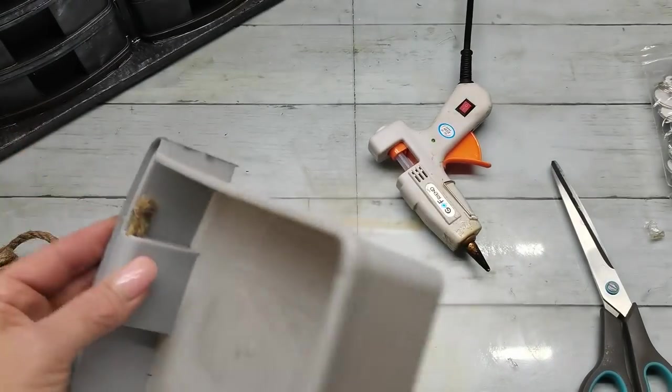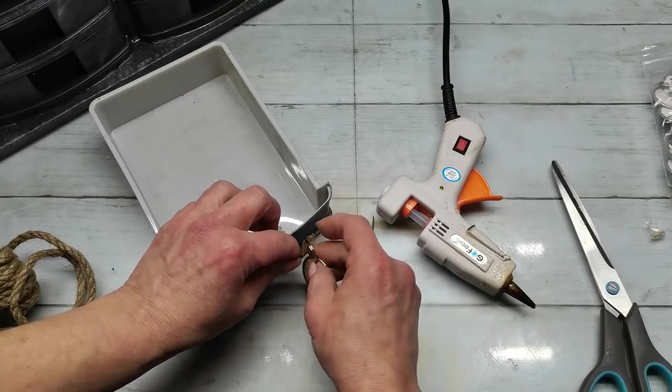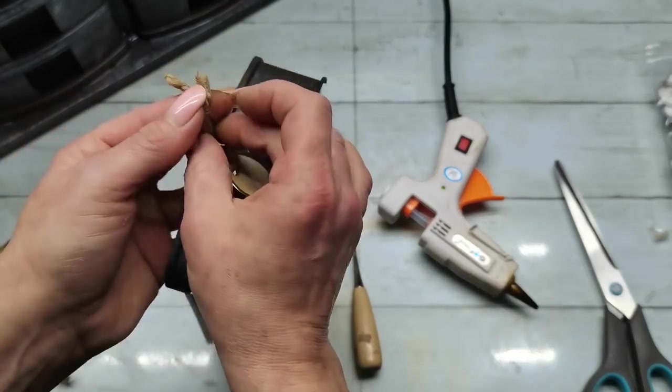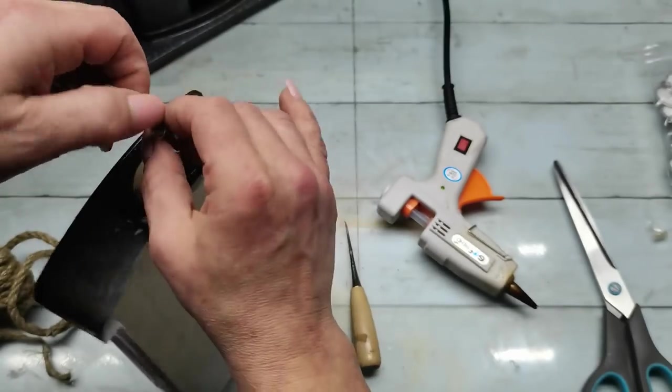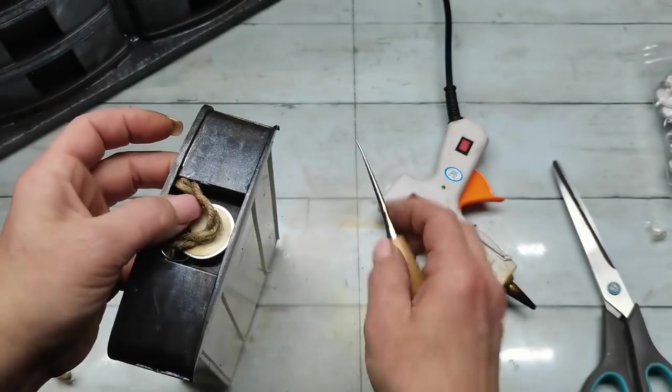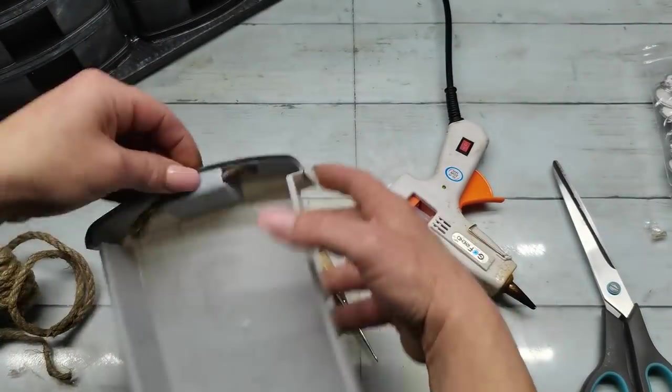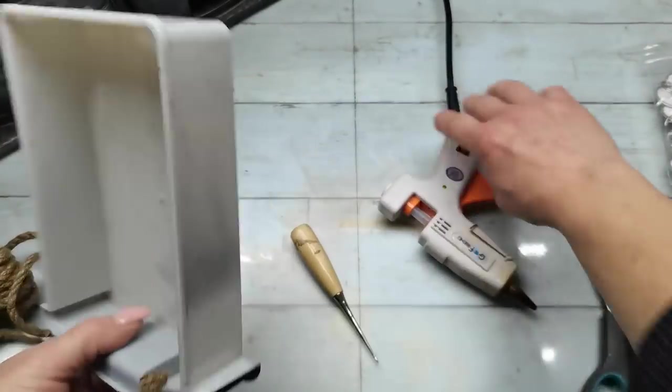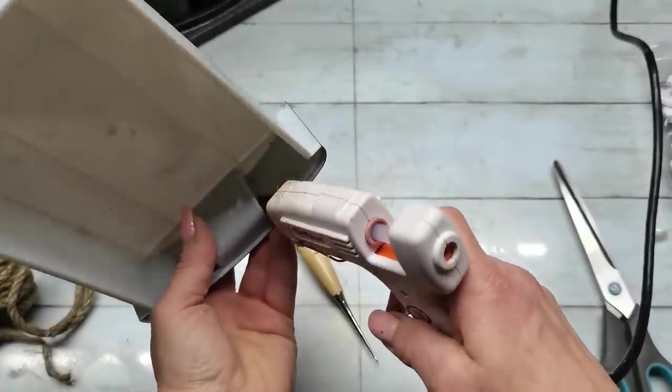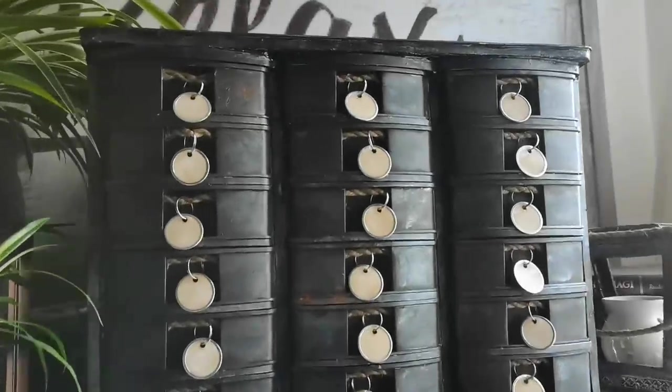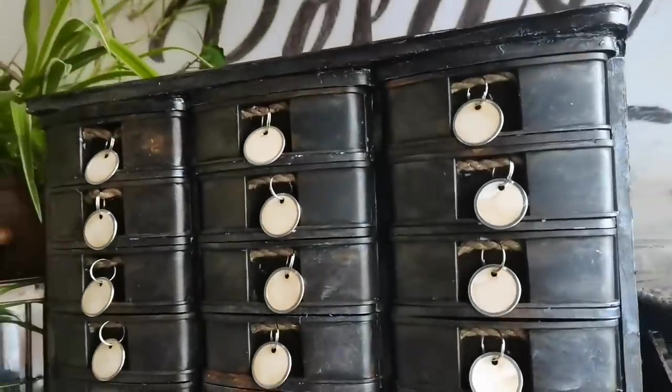I'm placing that jute rope to those spaces where there was before the handle from those drawers and I am gluing it again with hot glue. I put there quite lots of glue all around of that rope inside of that drawer to make sure it will hold well. And it does hold well so I'm happy I did use this technique - it was very easy and I think it looks amazing.